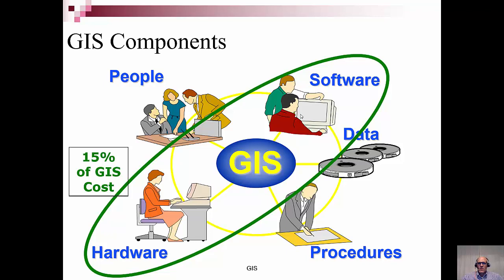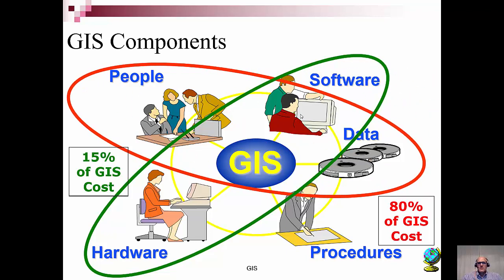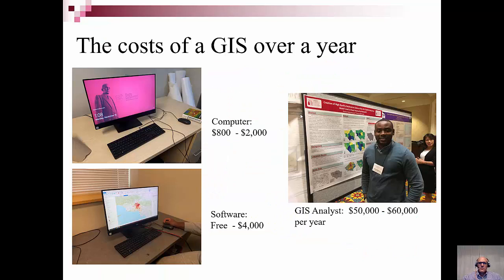Hardware and software are a really small part of GIS. People and the data with which we make decisions are extremely important, as are the procedures, which are always evolving. When we look at the costs of a GIS over a year, a desktop computer that can handle GIS may run from $800 to a couple thousand dollars. Some software is free, up to a few thousand dollars. But a GIS analyst will make $50,000 to $60,000 a year starting out, with technicians, specialists, programmers, and managers making more than that.